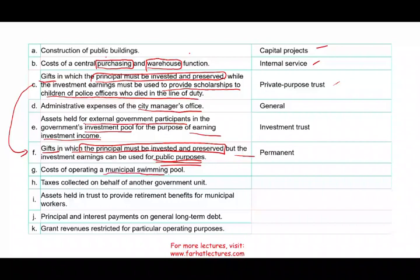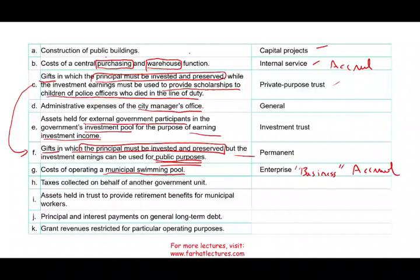Transaction G: cost of operating a municipal swimming pool. We have a pool, and this is the cost to operate it. If we have costs, it means we have to generate revenue from this swimming pool — we charge fees. We're running this like a business. The fund used to report activities where we charge a fee for goods and services is called the enterprise fund — think of it as a business fund. In enterprise and internal service funds, we use the accrual basis of accounting. For details on when accrual versus modified accrual is used in each fund, visit farhatlectures.com.